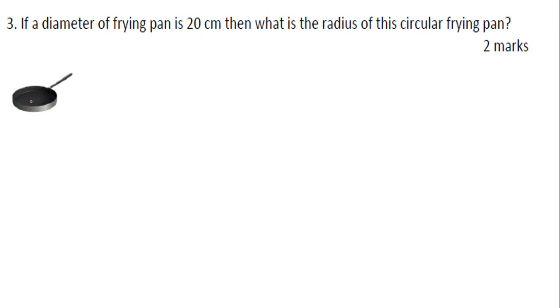Come to the next question. If a diameter of frying pan is 20 cm, now this is a frying pan. They have told us the diameter of this, so we will draw this line that is passed from the center. First we will make the center. If we make the center here, we will make the diameter. This is how much: 20 cm. What is the radius of the circular frying pan?